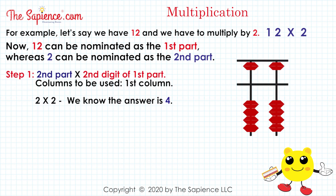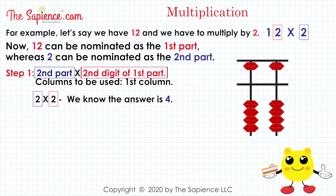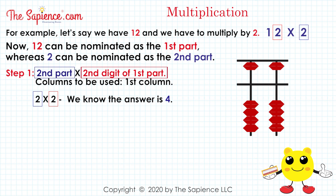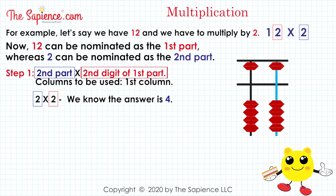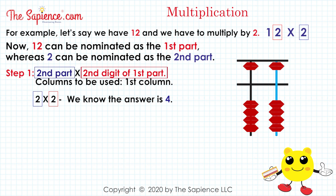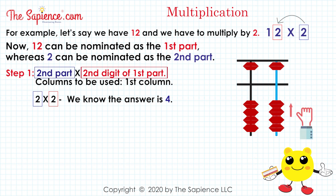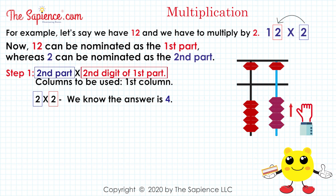Step 1: second part multiplied by second digit of first part. Columns to be used: first column. 2 multiplied by 2, we know the answer is 4. Now we will add 4 onto the first column.